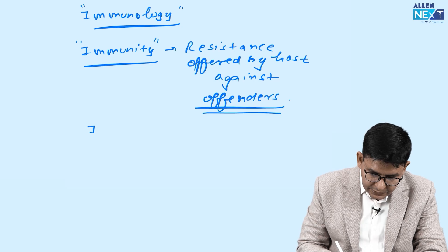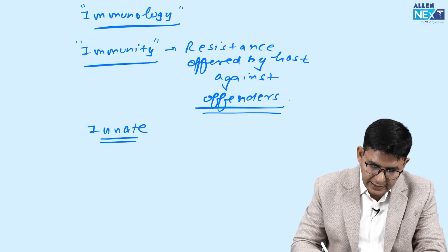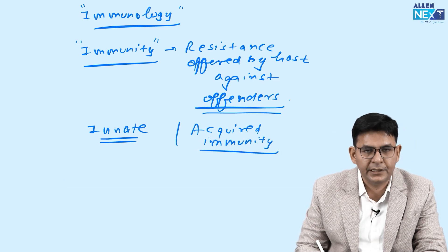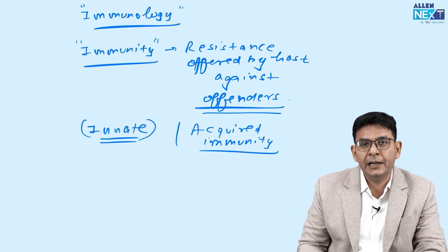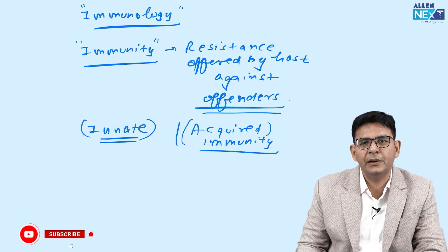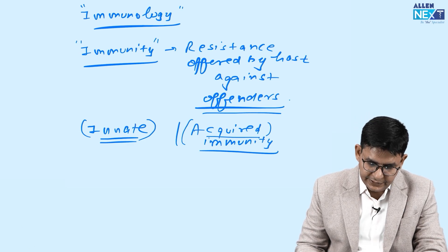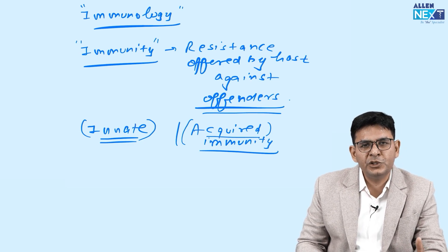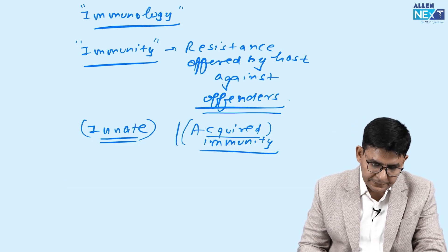Immunity can broadly be classified into innate and acquired. Things we get from our parents — the constitutional makeup — that comes under innate immunity. The things we acquire in life, through hard work and effort, fall under acquired immunity. So innate immunity is based on your constitutional makeup, and acquired immunity is what you have achieved through effort.